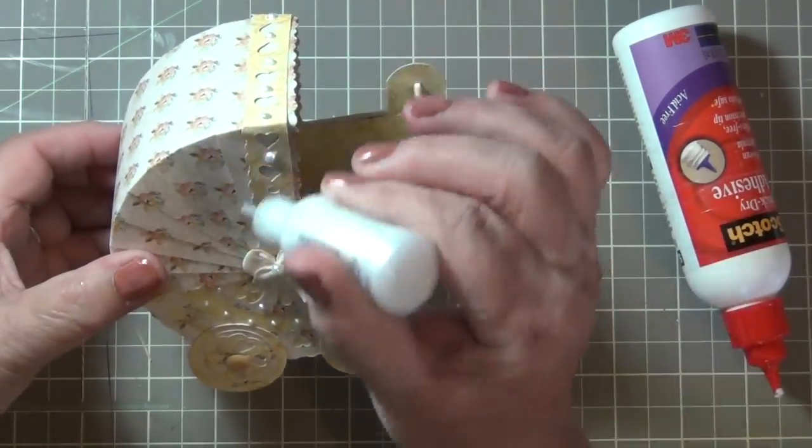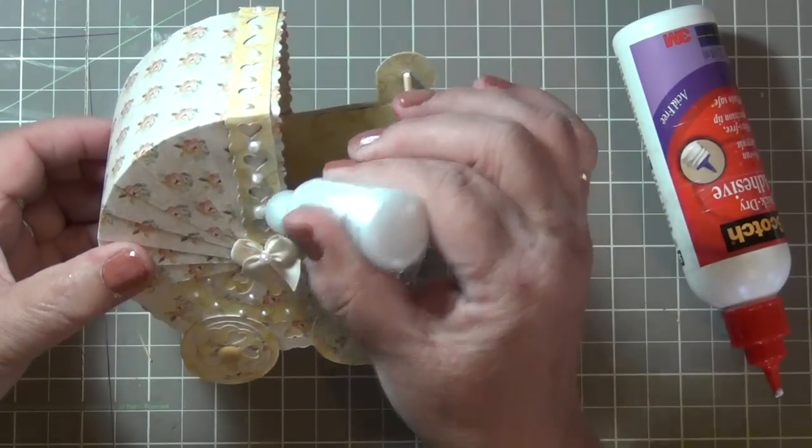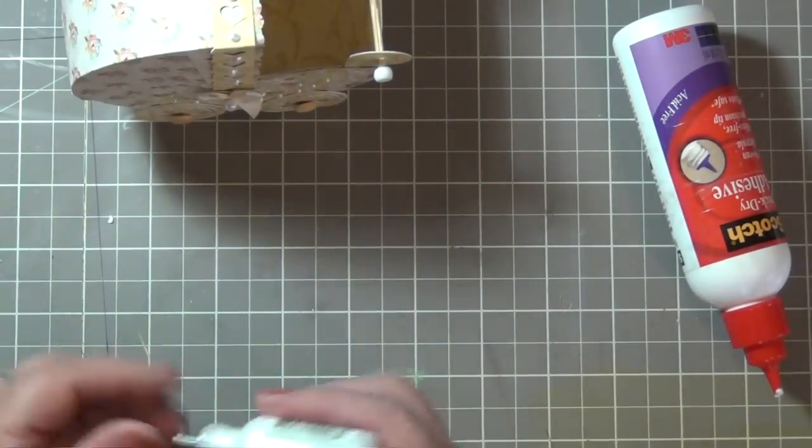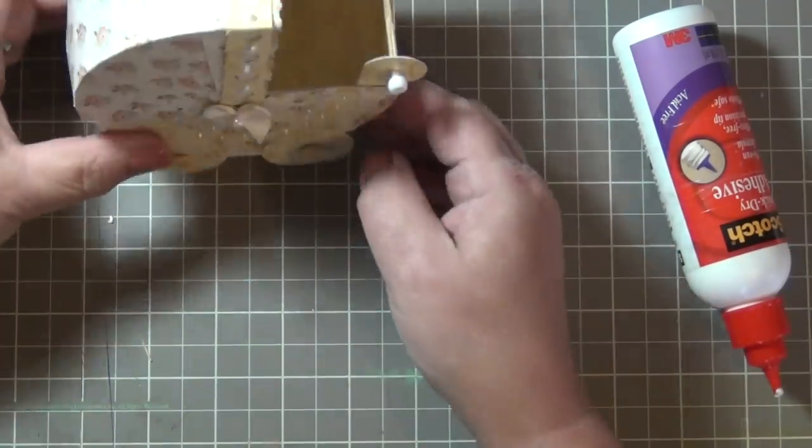So now I'm going to decorate this strip with a liquid pearl so it matches the side of the buggy. It's coming along really nice. I think it's really cute. But I think I forgot something. Hmm. What's wrong?